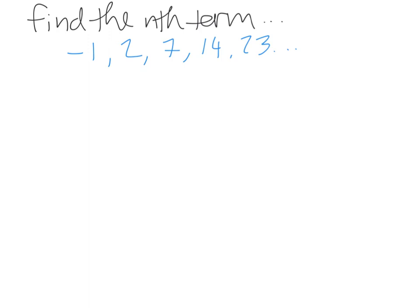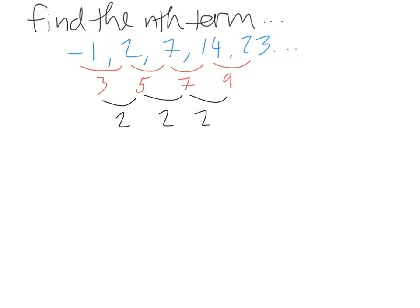Again, we're trying to find the nth term of a sequence. We start off by finding the difference between each term. To get from -1 to 2, it's a difference of 3. From 2 to 7, a difference of 5. From 7 to 14, a difference of 7. From 14 to 23, a difference of 9. Since the first difference is not the same, it's not an arithmetic or linear sequence. So we find the second difference: from 3 to 5 is 2, from 5 to 7 is 2, from 7 to 9 is 2. Since the second difference is the same, our sequence is definitely quadratic, and n squared is contained in it.